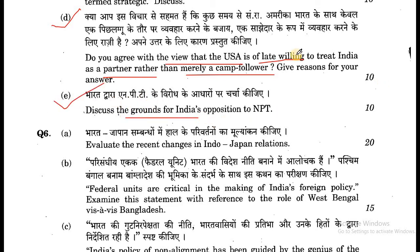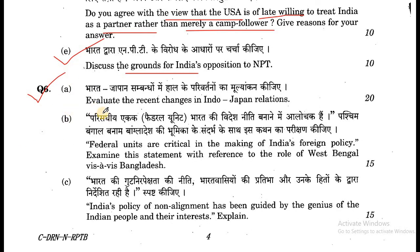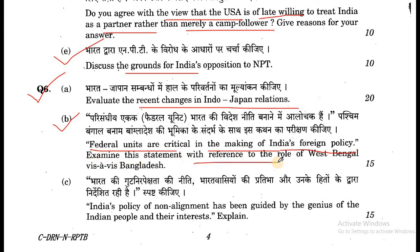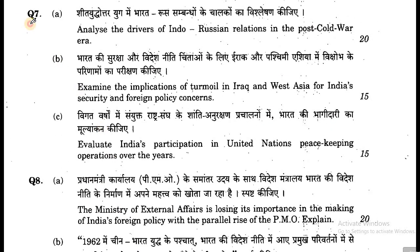Question number 6: (a) Evaluate the recent changes in Indo-Japan relations. (b) Federal units are critical in the making of India's foreign policy. Examine this statement with reference to the role of West Bengal vis-à-vis Bangladesh. (c) India's policy of non-alignment has been guided by the genius of the Indian people and their interests. Explain.